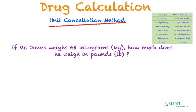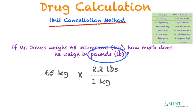If Mr. Jones weighs 65 kilograms, how much does he weigh in pounds? The very first thing we look for is what is the problem asking — in this case, pounds. We write down what is given: 65 kilograms times the conversion, 1 kilogram equals 2.2 pounds. We write it so we can cancel kilograms and kilograms, leaving us with pounds. So the math: 65 times 2.2 divided by 1 gives us 143 pounds.